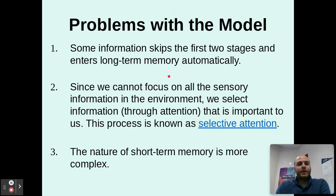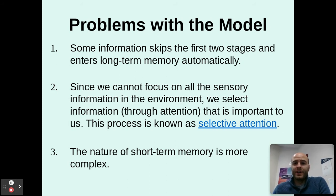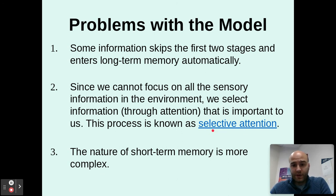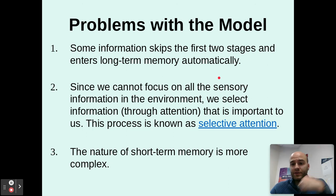There are a few problems with this model. Some information we know skips the first two stages of sensory and short-term memory and goes directly into long-term. Since we cannot focus on all sensory information in the environment, we select important information through our attention — this is known as selective attention. When you're watching TV or doing homework and your mom says don't forget to wash the dishes, and she asks 20 minutes later why you haven't done it and you say she never asked — that's due to selective attention, because your sensory memory did not take in all of those potential senses around you.